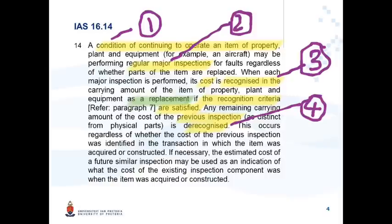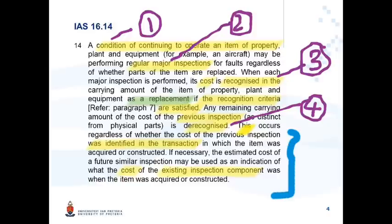This is very similar to the cost incurred to replace a component, and that's why paragraph 14 says to treat this major inspection as a replacement. De-recognition occurs regardless of whether the cost of the previous inspection was identified in the transaction in which the item was acquired or constructed. If necessary, the estimated cost of a future inspection may be used as an indication of what the cost of the existing inspection component was when the item was acquired or constructed.